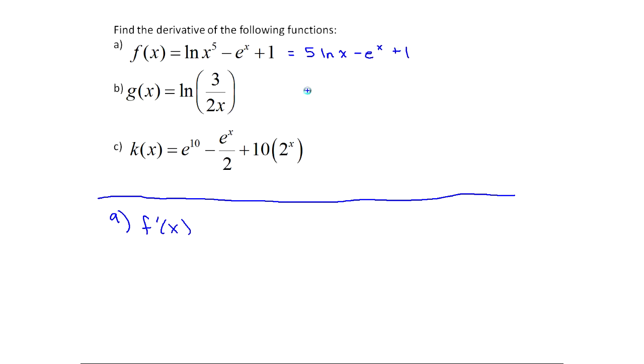With that stated, now I can find this derivative. That's five times the derivative of ln x. The derivative of ln x is 1 over x. That's one of those new rules. Then minus the derivative of e to the x. Well, the derivative of e to the x is e to the x. It's a special function.